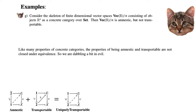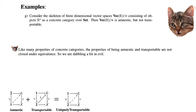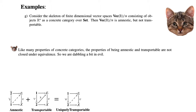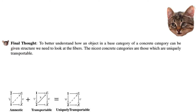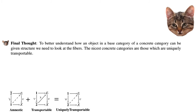Like many properties of concrete categories, the properties of being amnestic and transportable are not closed under equivalence, so we are dabbling a little in the concept of 'evil' — which you can look up on the nLab. As a final thought: to better understand how an object in the base category of a concrete category can be given structure, we need to look at the fibers, and the nicest concrete categories are those which are uniquely transportable.